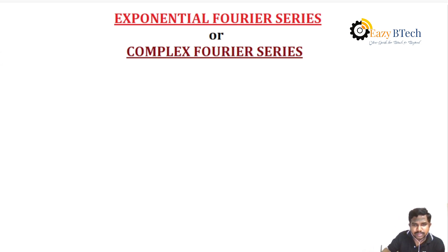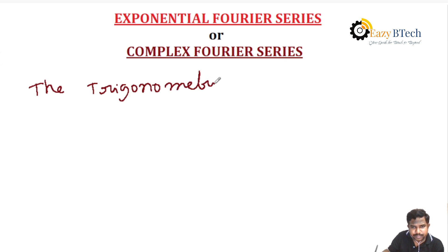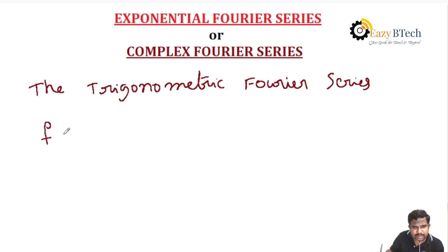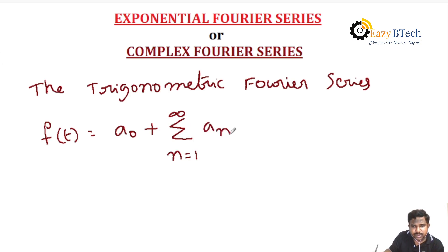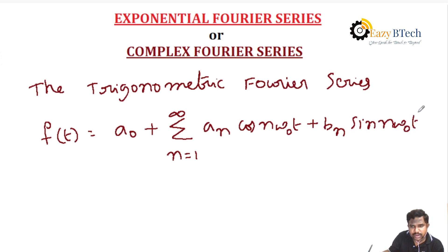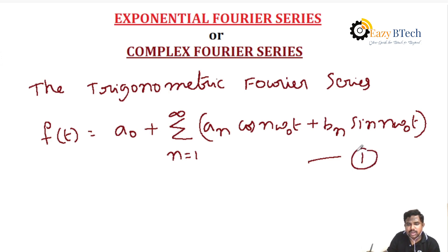Before developing the equation, we already know the trigonometric Fourier series. The main equation of the Fourier series in trigonometric form is: f(t) = a0 + Σ (n=1 to ∞) [an·cos(nω₀t) + bn·sin(nω₀t)]. We will consider this as equation 1.